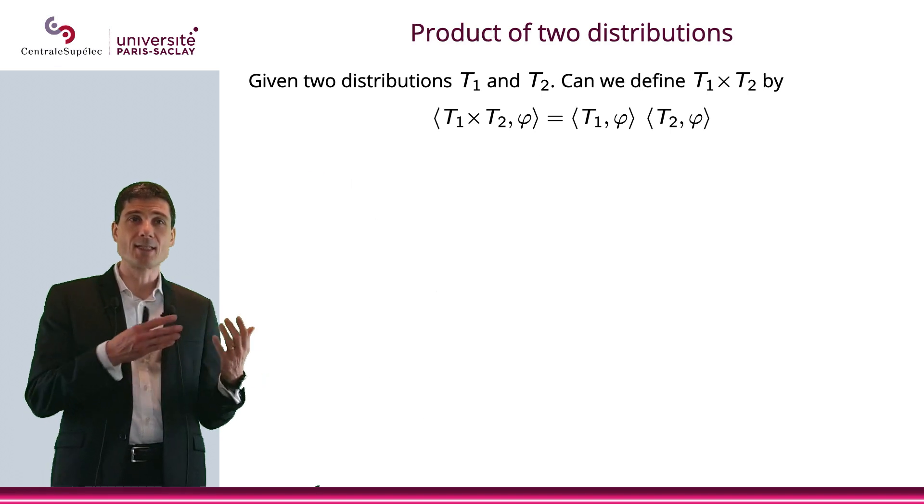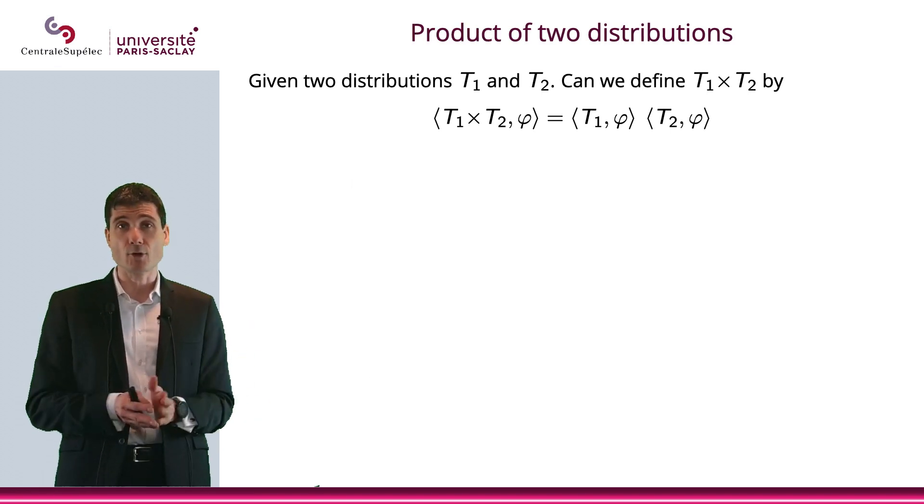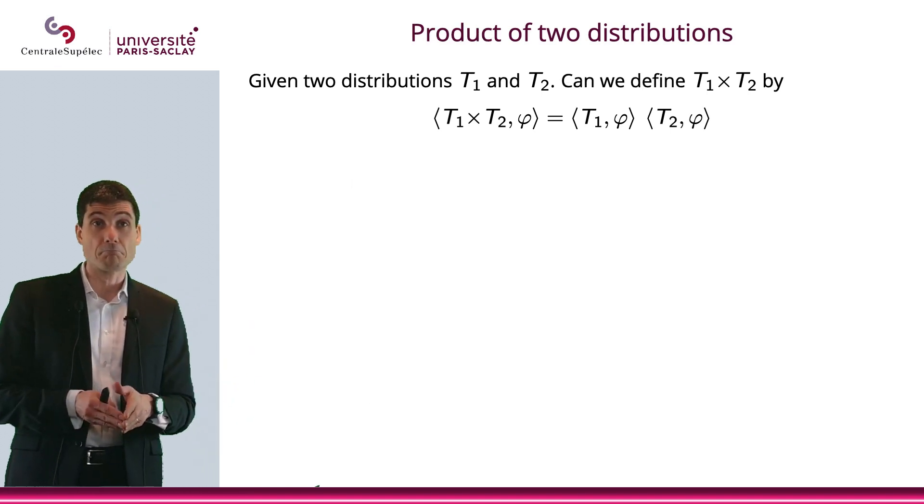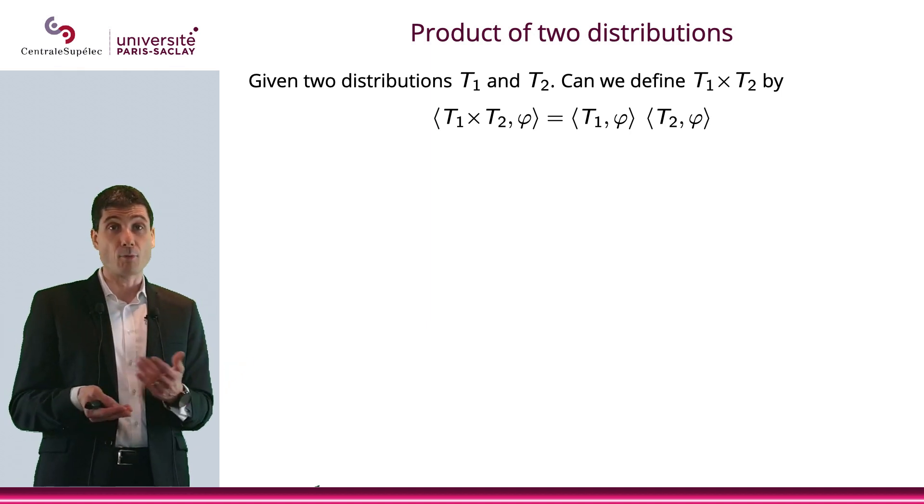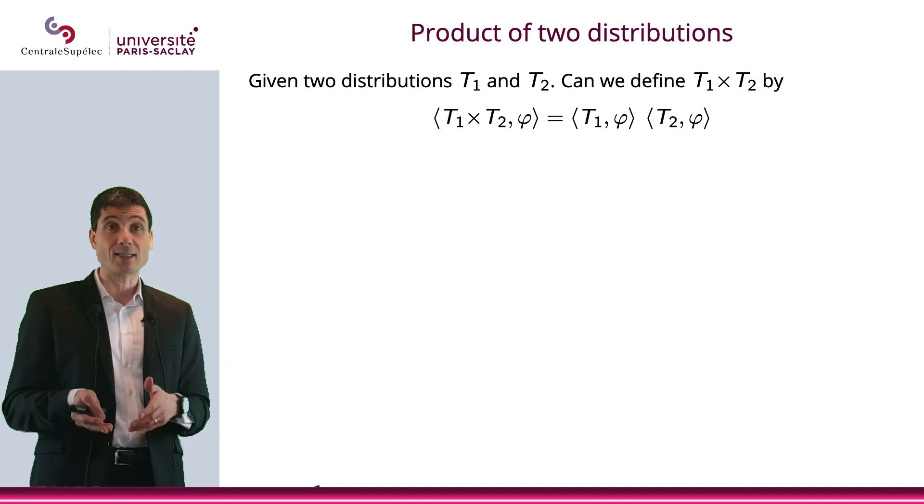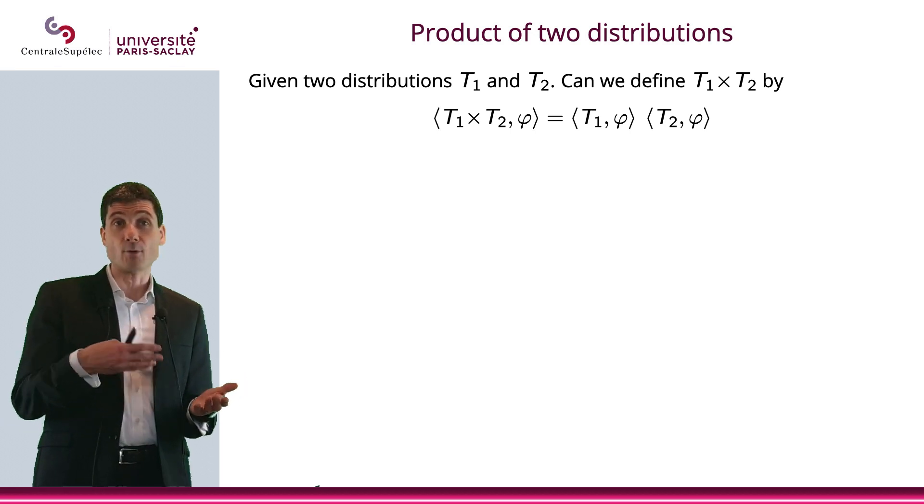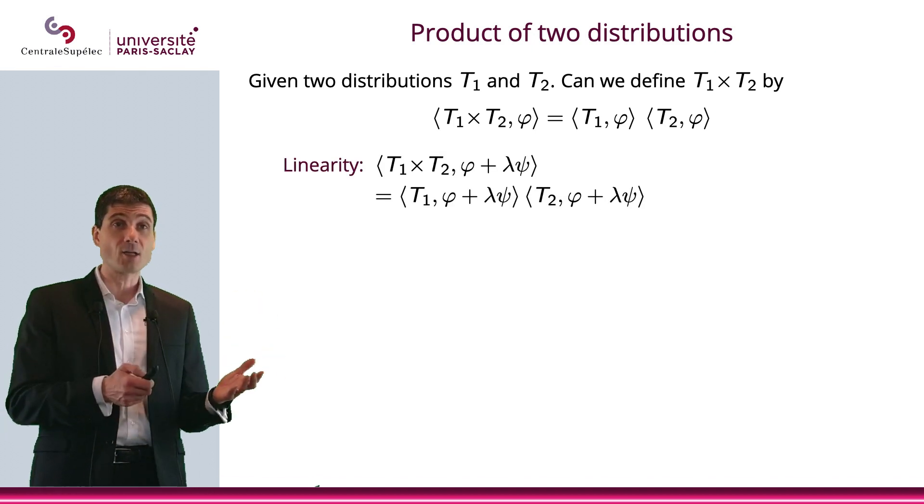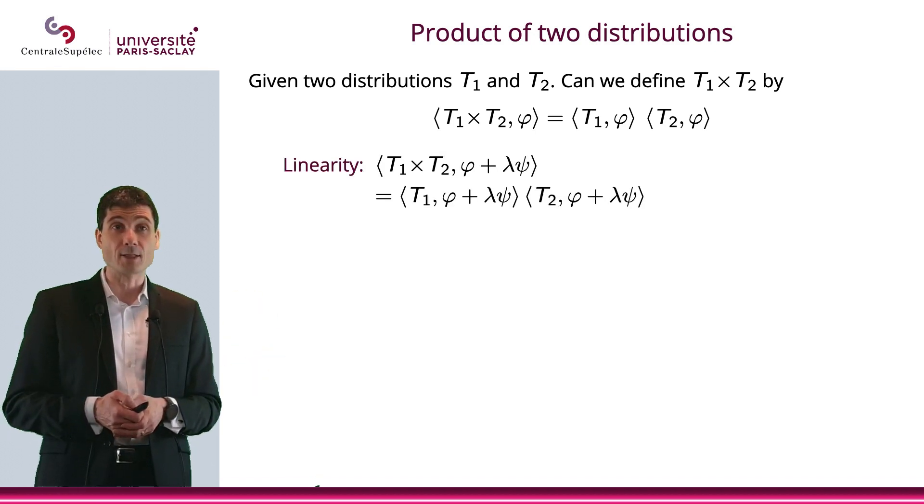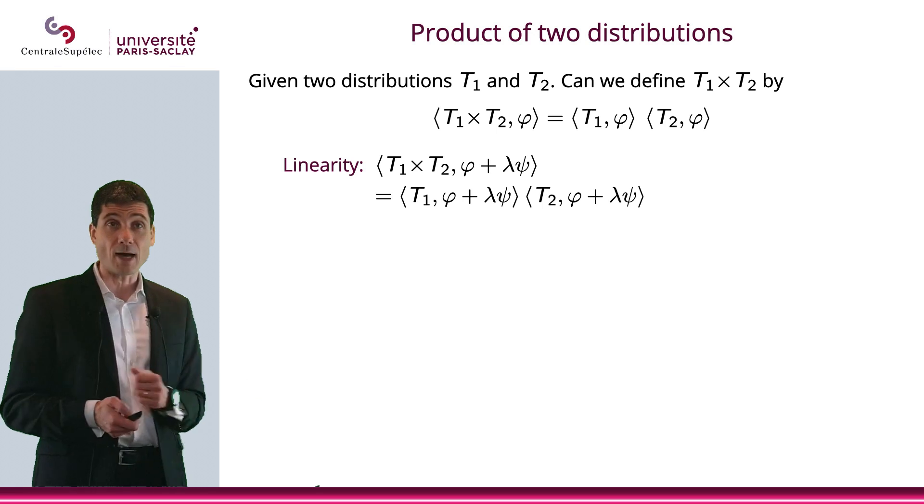Let's look at a product. So let T1 and T2 be two distributions. And my question is, can we define T1 times T2? And it would be pretty natural to actually define this T1 times T2 applied to φ equals T1(φ) times T2(φ). So let's try to see if this is linear. So T1 times T2 applied to φ plus λψ.